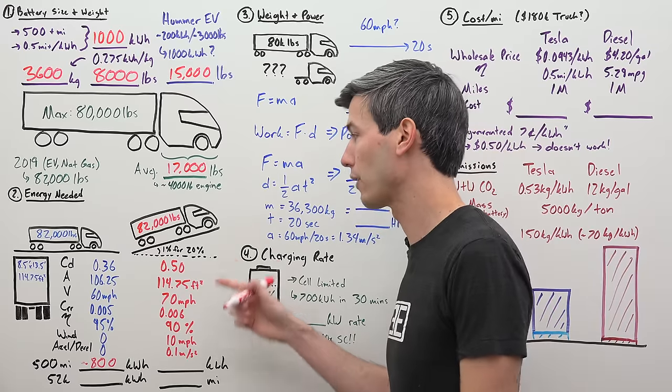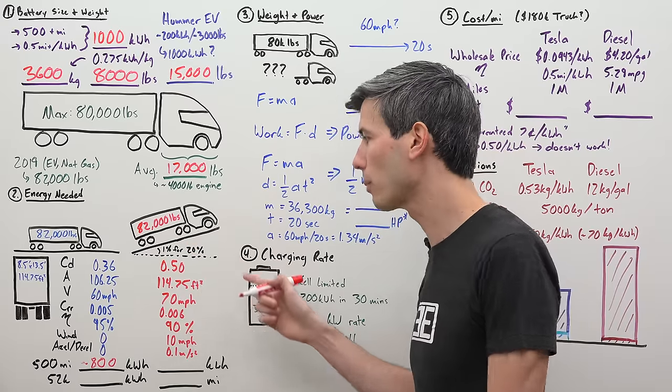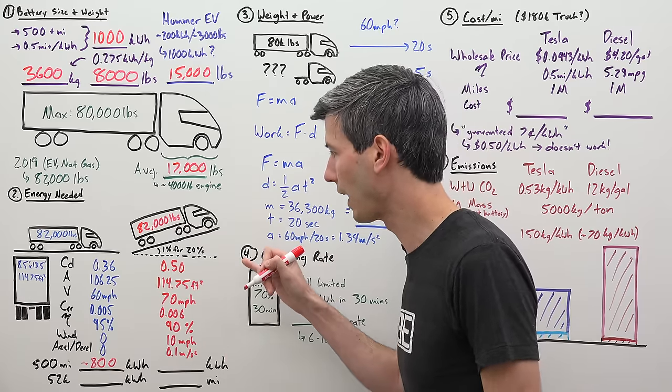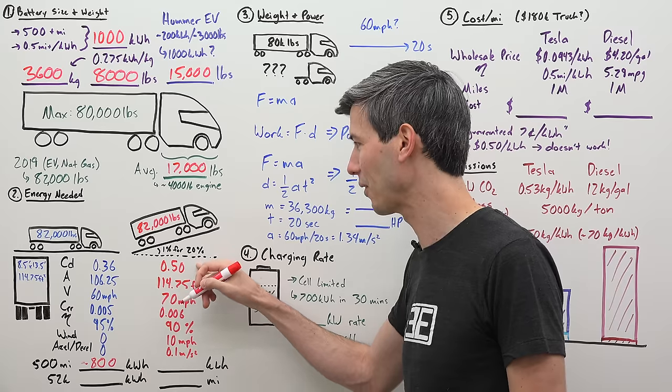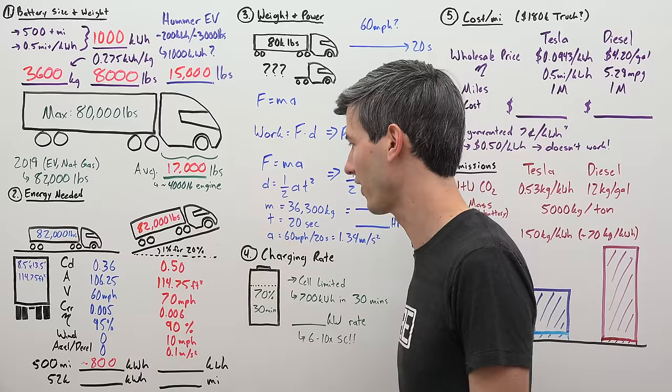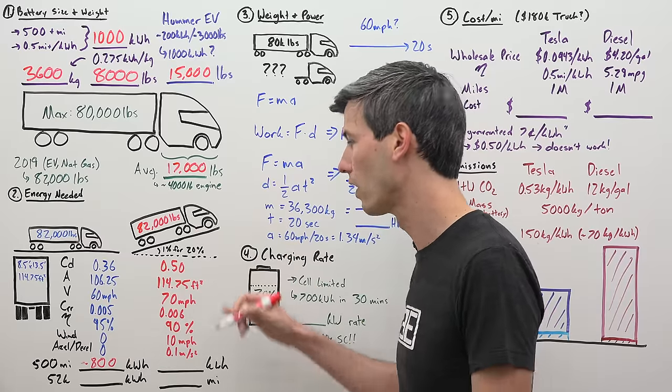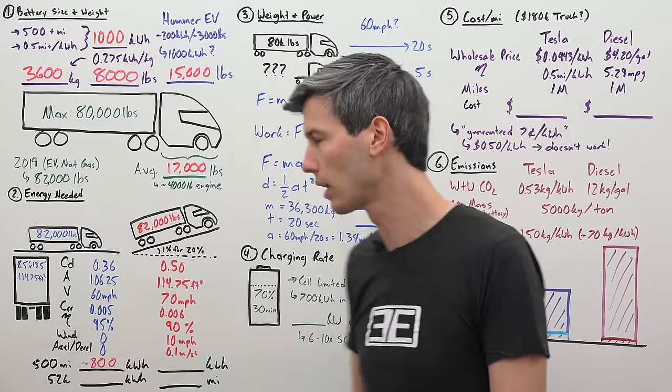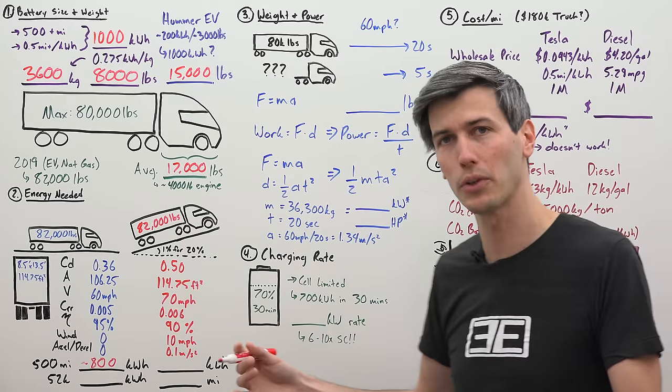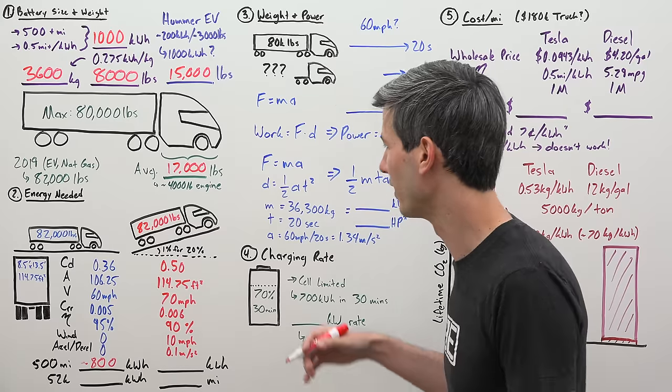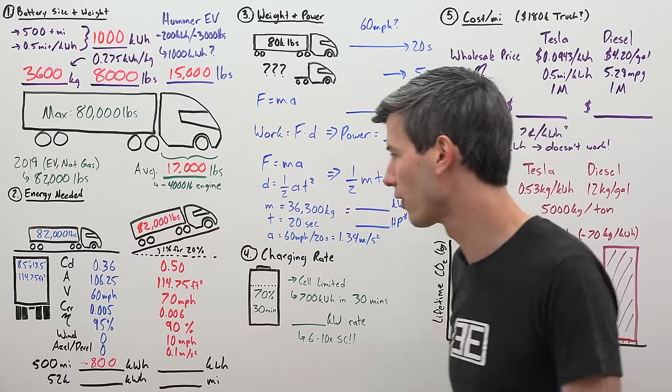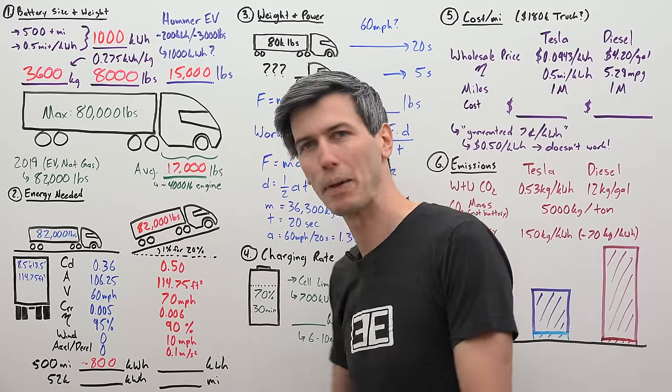Now if we look at a harder scenario: Tesla semi fully loaded, and for 100 of those 500 miles it's going up a 1 percent grade. Drag coefficient of 0.5, I think this is still really good. Same frontal area, traveling at 70 miles per hour, that seems more realistic. Rolling resistance coefficient is slightly higher. Efficiency is 90 percent, still really good. We have a 10 mile per hour headwind for this drive and we're spending some time accelerating and decelerating.